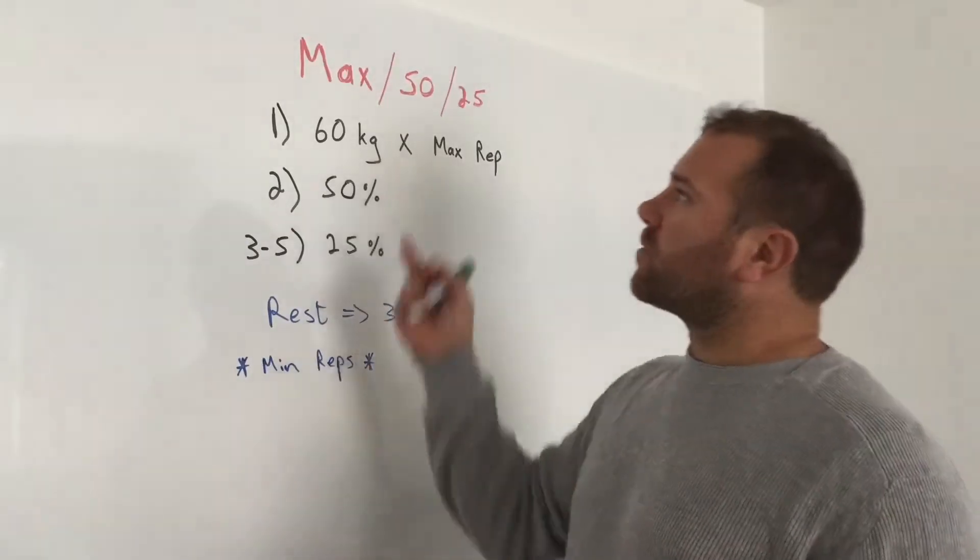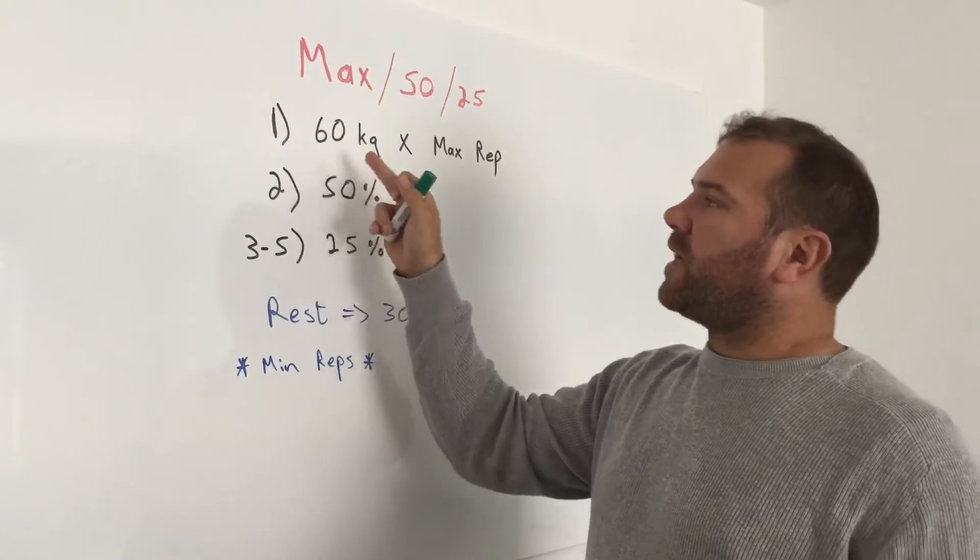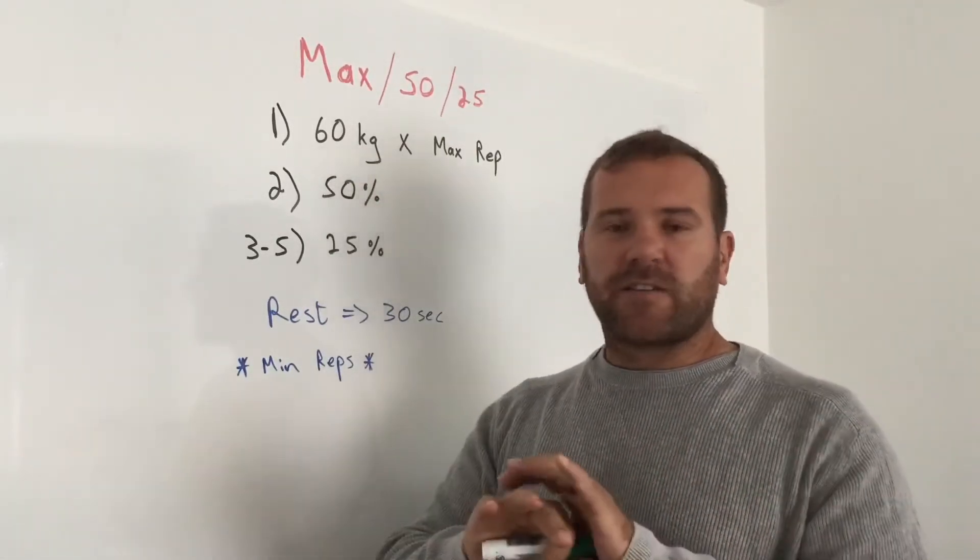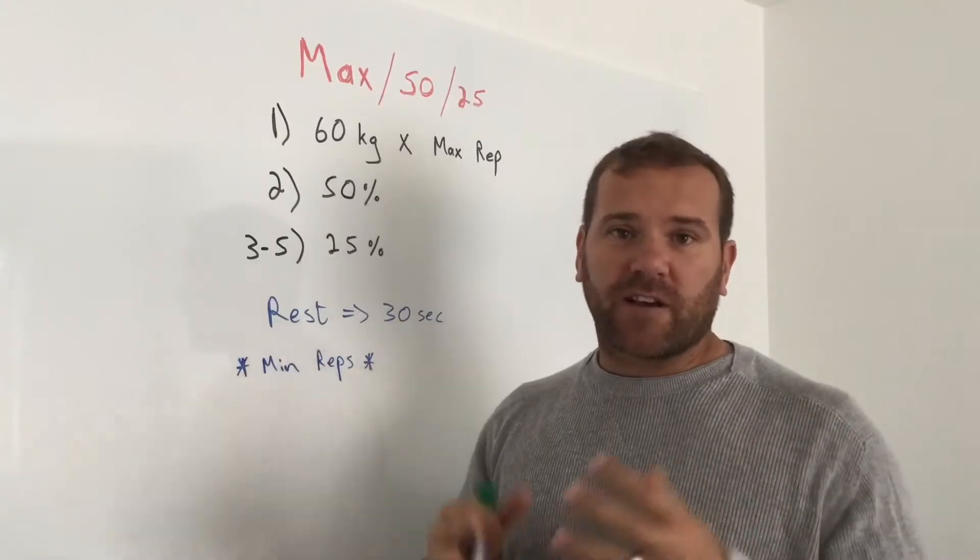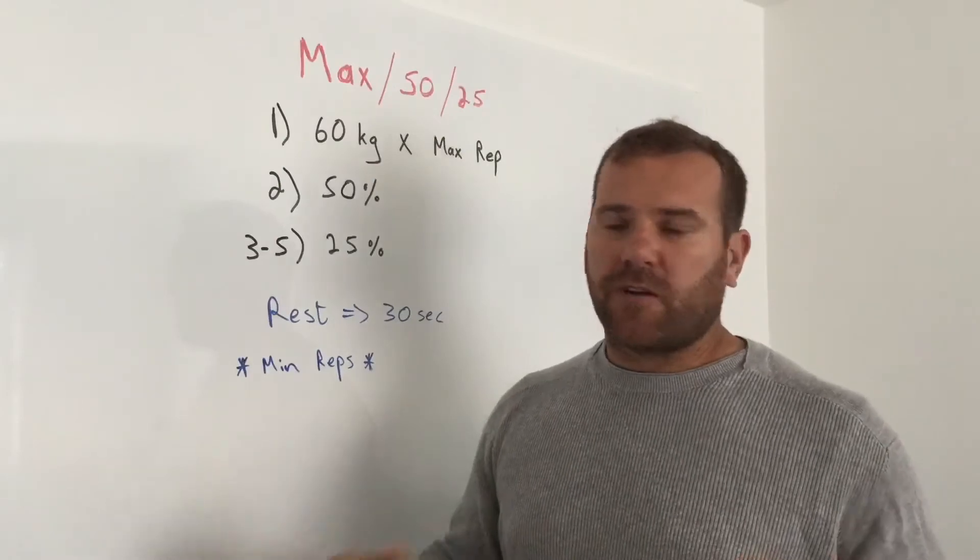What we're going to do is a max 50-25. We're going to take a bench press, set it up for 60 kilograms - the bar is 20, 20 on each side, that's 60. You're then going to go for the maximum amount of reps you can do.